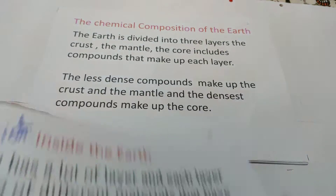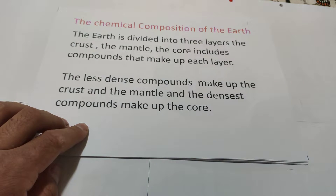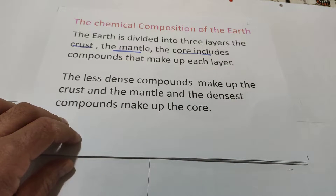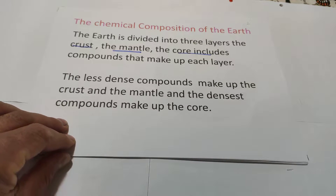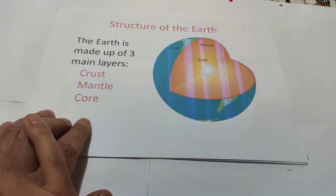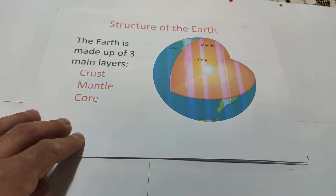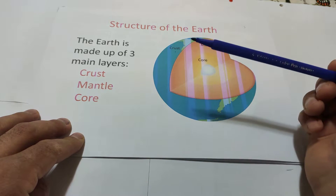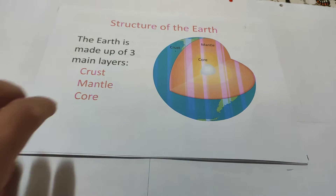Let us start with chemical composition. The chemical composition of earth - the earth is divided into three layers: the crust, the mantle, and the core. The least dense compounds make up the crust and mantle, and the dense compounds make up the core. The surface of earth we call crust. The middle layer of earth we call mantle. The center of earth we call core.